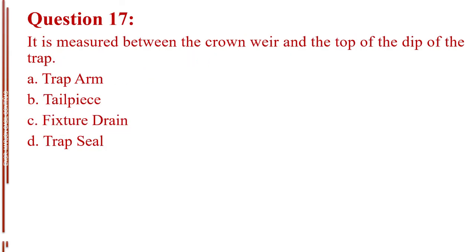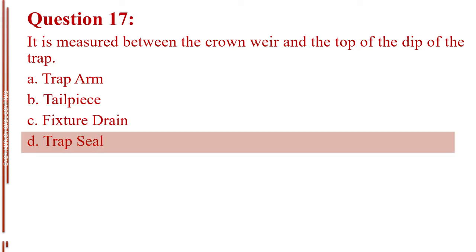Question number 17. It is measured between the crown weir and the top of the dip of the trap. Letter A, trap arm. Letter B, tailpiece. Letter C, fixture drain. Letter D, trap seal. The answer is Letter D, trap seal.